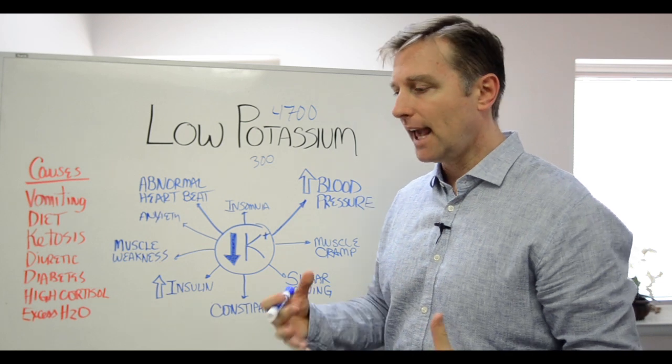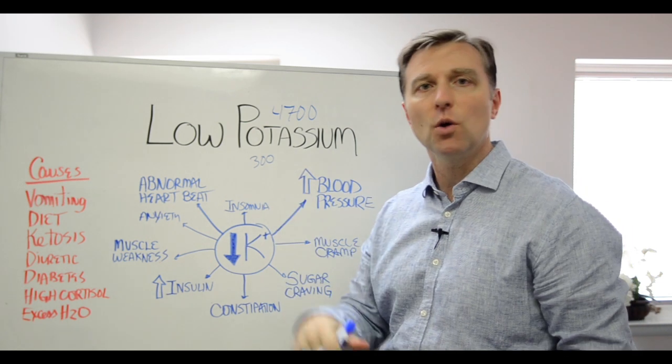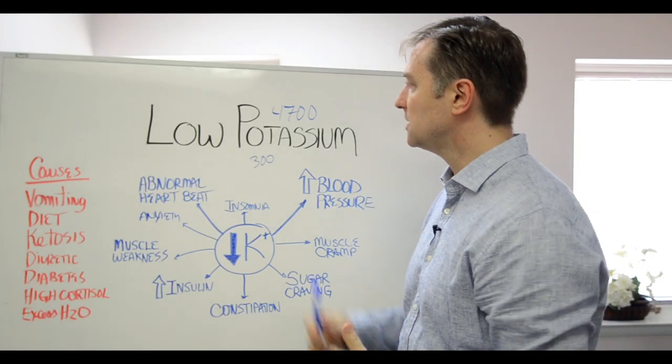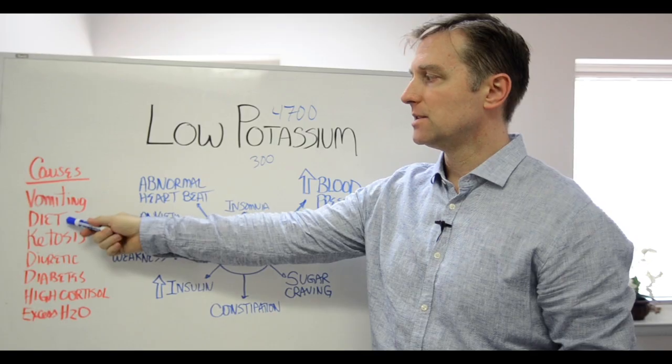If you don't like salad, take kale, maybe a little bit of berry, blend it with water and drink your salad. That'll get the potassium in there. So we want to start to increase that, and that's how we increase it from the diet.